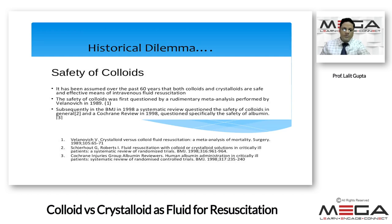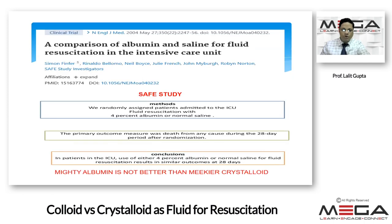Subsequently, a systematic review questioning the safety of colloids was published in the BMJ, and a Cochrane review came in 1998 which specifically questioned the safety of albumin. But there was no clear answer in those systematic reviews — they just presented the question of whether colloids should or should not be used. Then in 2004, there was the SAFE trial, which compared albumin and saline for fluid resuscitation in intensive care, randomizing 4% albumin and normal saline. The primary outcome measured was death at 28 days.